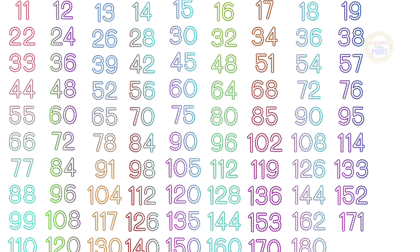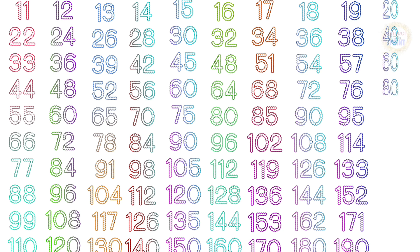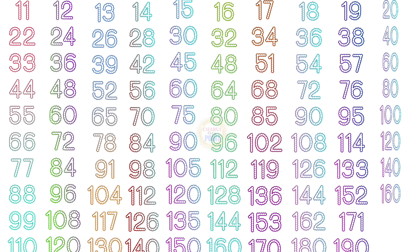Table of 20: 20×1=20, 20×2=40, 20×3=60, 20×4=80, 20×5=100, 20×6=120, 20×7=140, 20×8=160, 20×9=180, 20×10=200.